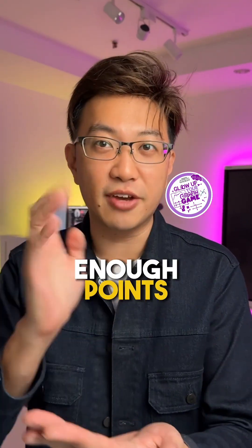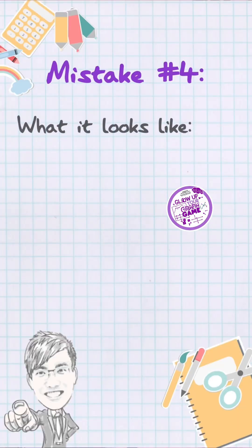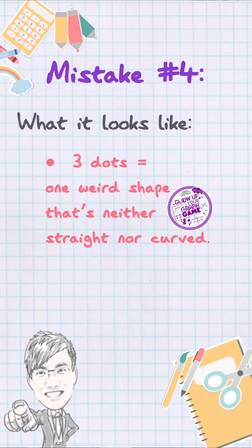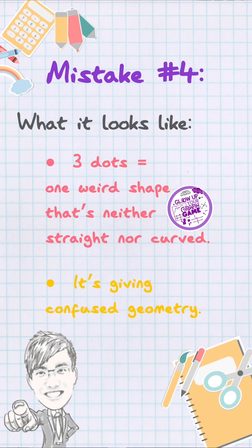Mistake number 4: not using enough points. What it looks like — 3 dots and one weird shape that's neither straight nor curved. It's giving confused geometry.